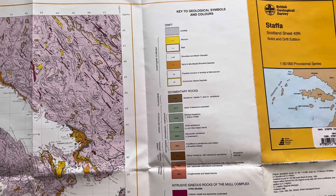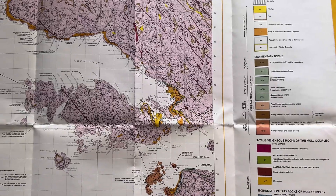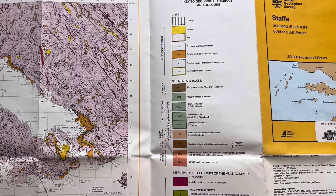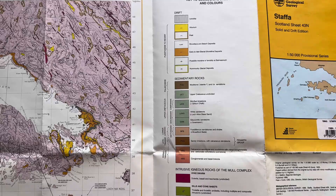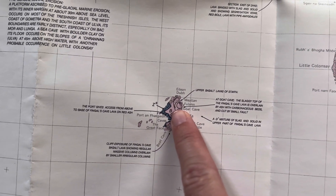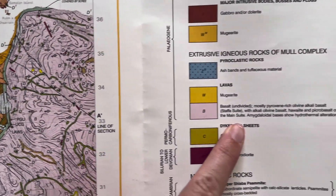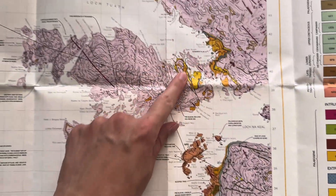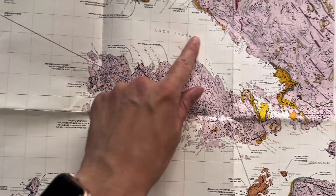This is the geological map of Staffa — it's Sheet 43 North, solid and drift edition. When we look at Staffa, we can see it's made up of this light pink rock that's got the label B. So when we look at the key, we can see that it's mainly made up of basalt, which is what most of Mull is made up of — all these lava flows that spewed out.